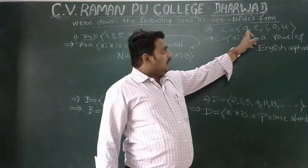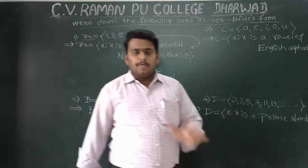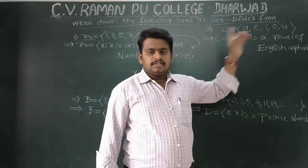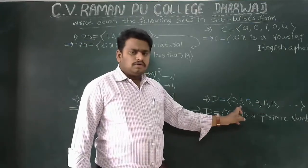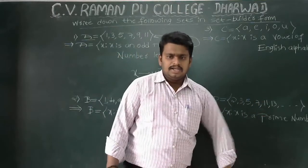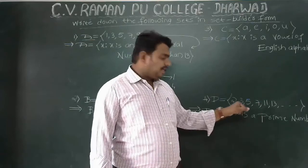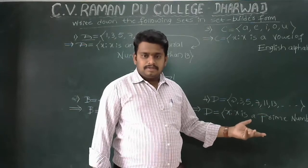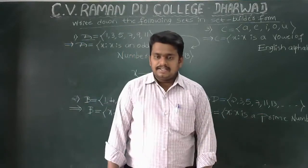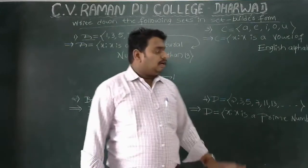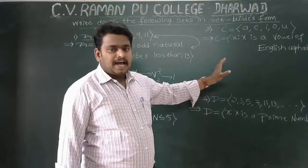Third example: C = {a, e, i, o, u} — these are the English alphabet vowels. So C = {x : x is a vowel of the English alphabet}. Fourth example: D = {2, 3, 5, 7, 11, 13, ...} — these are prime numbers. So D = {x : x is a prime number}.